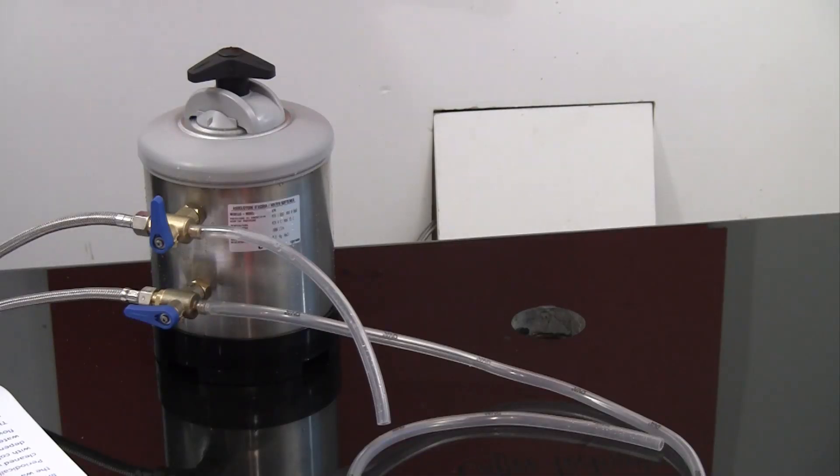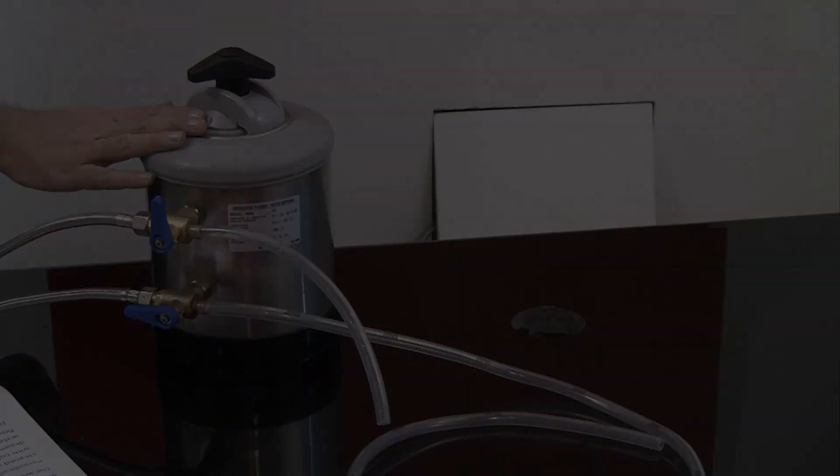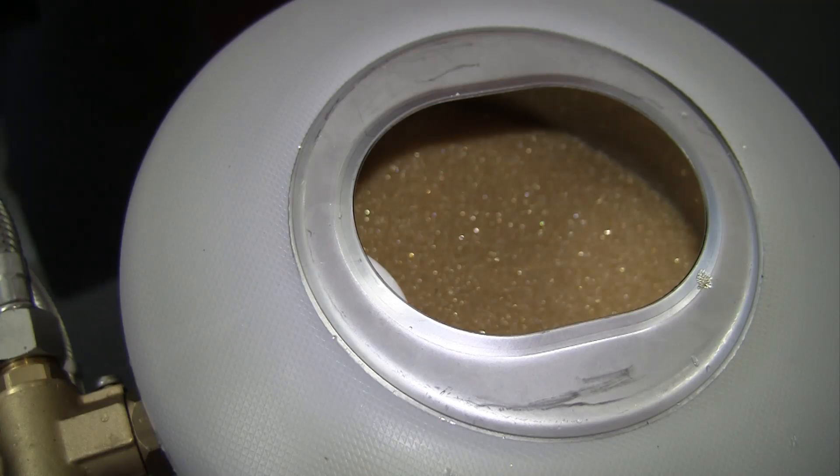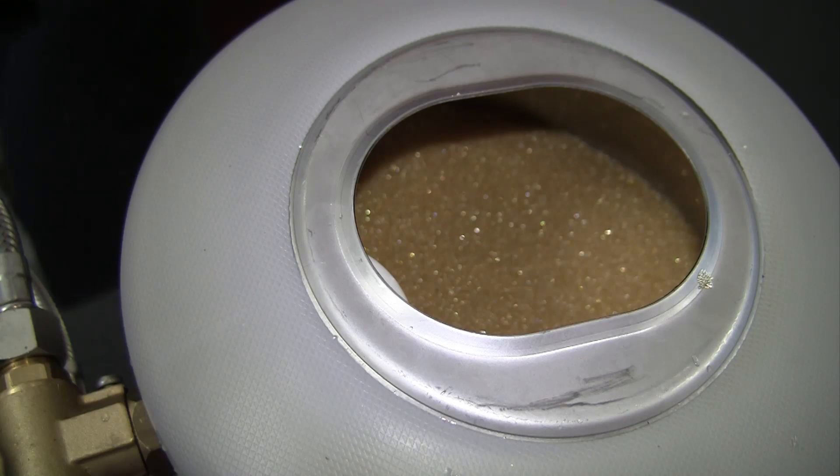The ion exchange unit is designed to decalcify incoming water, or in other words remove the lime particles from the water which can cause lime scale damage to your coffee machine. This unit here is a 5 litre unit and inside the unit there is a golden coloured resin which decalcifies the water. As the water flows through the resin, the lime particles stick to the resin leaving the water decalcified.